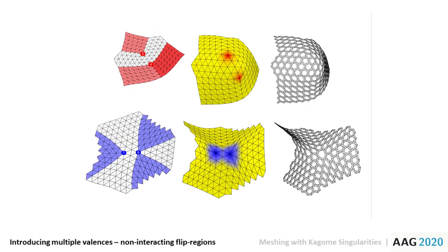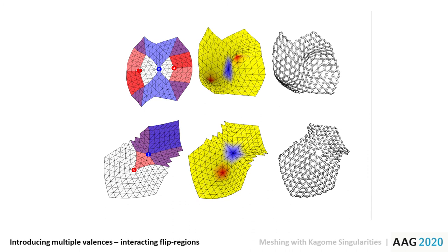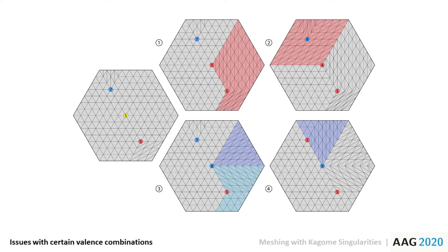Of course, from a design perspective, it becomes essential that multiple singularities can be introduced into a mesh. This is clearly possible in situations where the flip regions do not interact, but it is also possible in cases where flip regions interact. However, certain configurations of interacting flip regions produce undesirable results by changing the valence of previously introduced singularities, as shown in the cases here on the right.